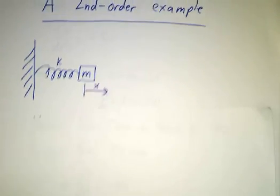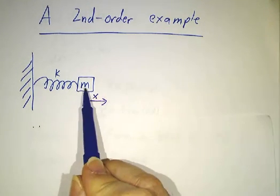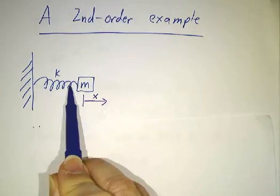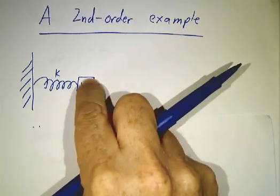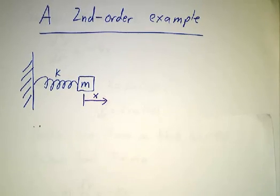So here's an example of a system that's modeled by a second order equation. We've got a mass m connected to a spring, spring constant k, and we just take the mass and pull it over to the side and let go and watch it bounce back and forth. What kind of equation governs its motion?